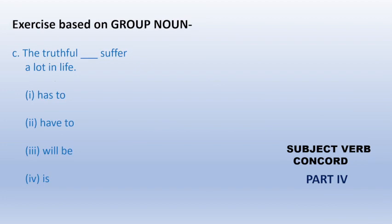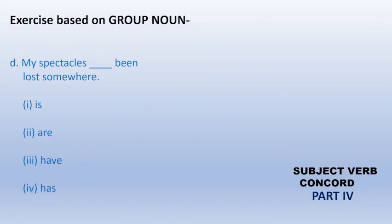The truthful suffer a lot in life. The truthful—that means adjective has taken the form of collective noun, meaning the truthful people. The truthful have to suffer a lot in their life. My spectacles have been lost. Spectacles—again a noun that is having two parts, so we will place have been. My spectacles have been lost somewhere.